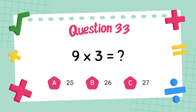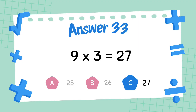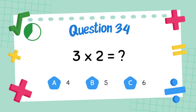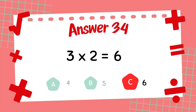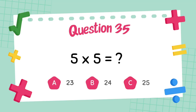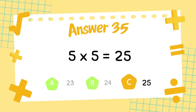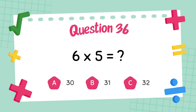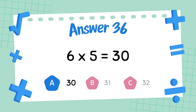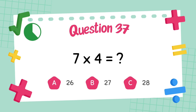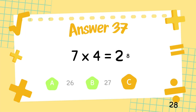What is 9 multiply 3? The answer is 24. What is 5 multiply 5? The answer is 24. What is 5 multiply 5? The answer is 25. What is 6 multiply 5? The answer is 25. What is 6 multiply 5? The answer is 28.